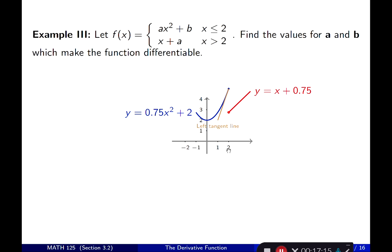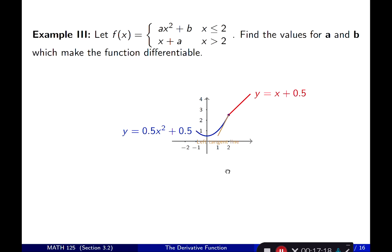We need to find a and b such that the two pieces are connected at x = 2. The brown line is the left tangent line and the red is the function to the right — which is also its own tangent line since the tangent line of a line is the line itself. If the two tangent lines are not aligned, we have to adjust a and b.